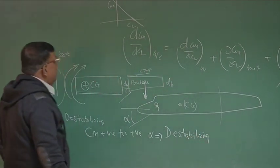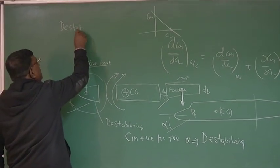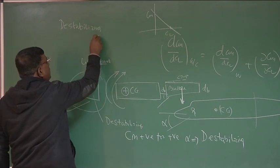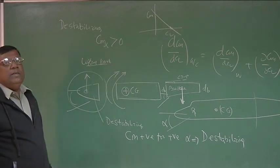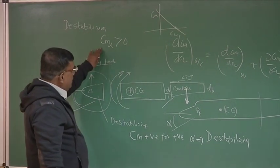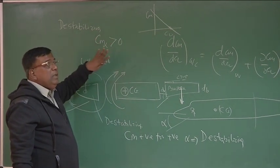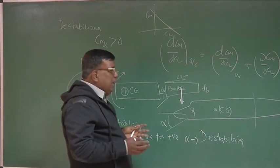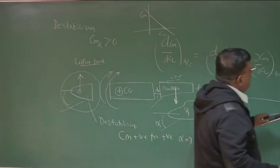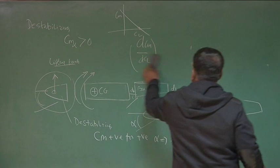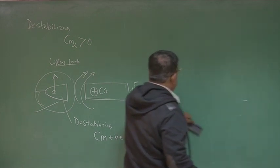Both nose and bowtail give CM positive for positive alpha — they are destabilizing. Therefore, CM_α for fuselage will be greater than 0. For stability we need CM_α < 0, so the fuselage always contributes toward destabilization. There are empirical methods to calculate the value of CM_α or dCM/dCL for the fuselage, which I will now give you.